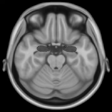The neuroscience of music is the scientific study of brain-based mechanisms involved in the cognitive processes underlying music. These behaviors include music listening, performing, composing, reading, writing, and ancillary activities.